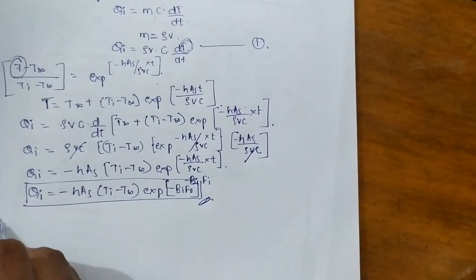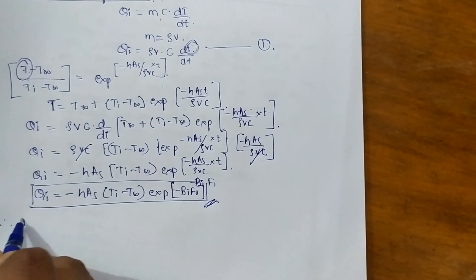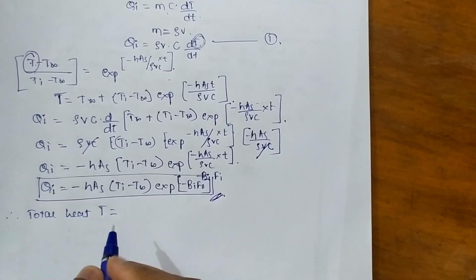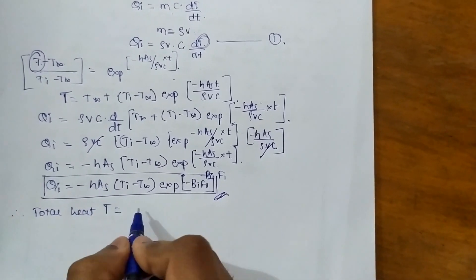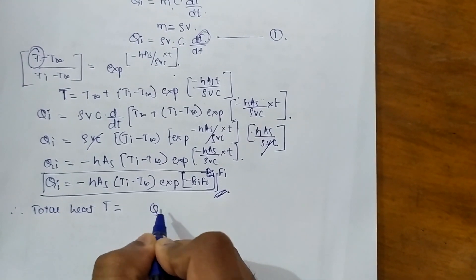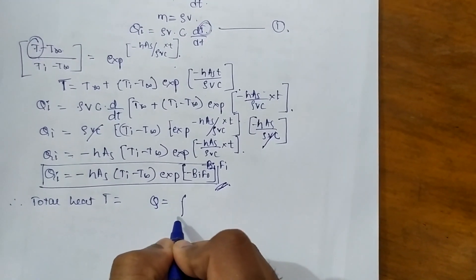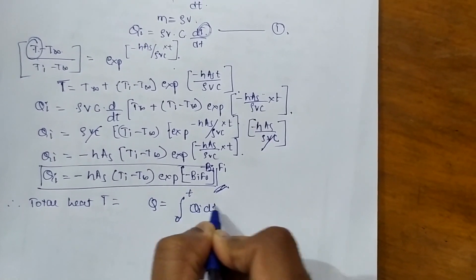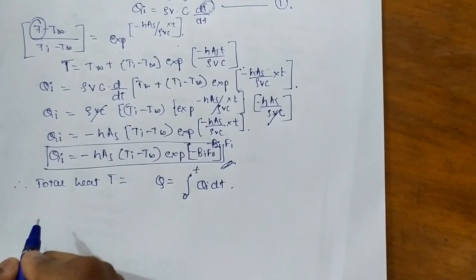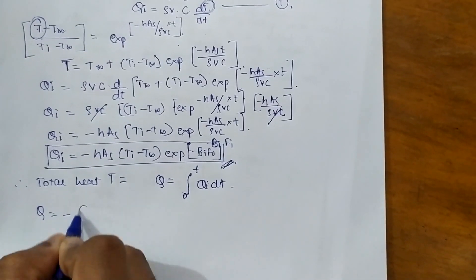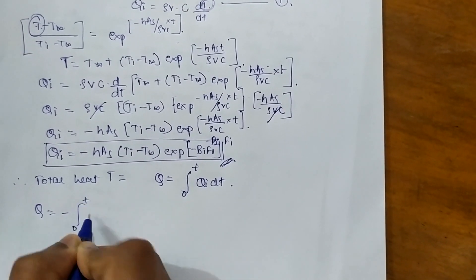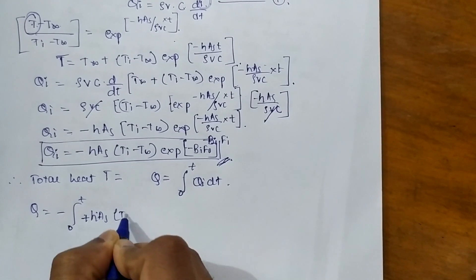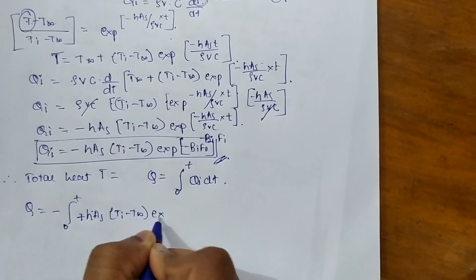Now we will derive total heat transfer. Total heat transfer is obtained by integrating the above equation: Q = integral from 0 to t of qi dt. So Q = integral from 0 to t of [-h·As·(Ti - T∞)·exp(-h·As / ρVc · t)] dt.